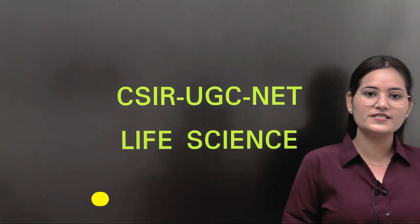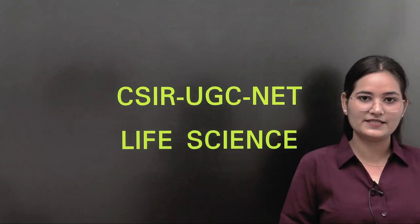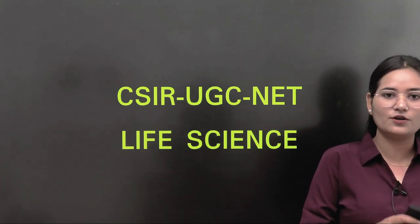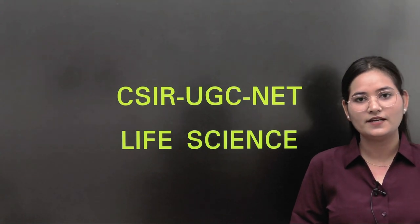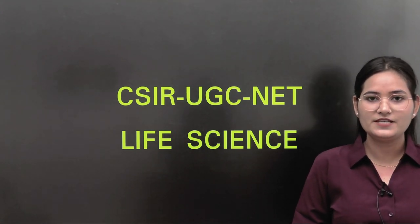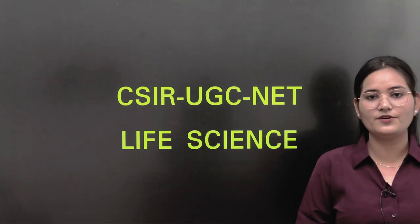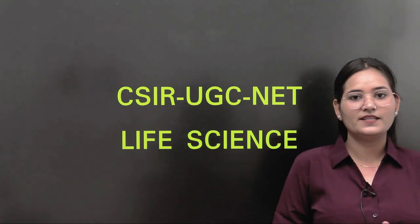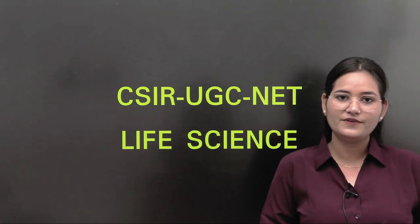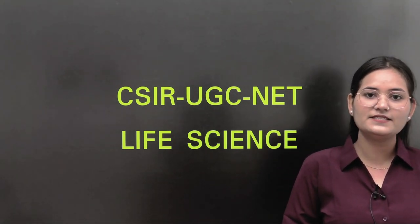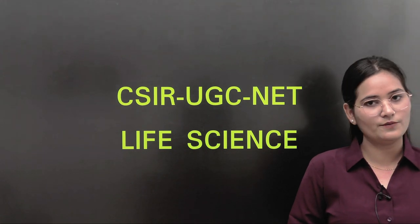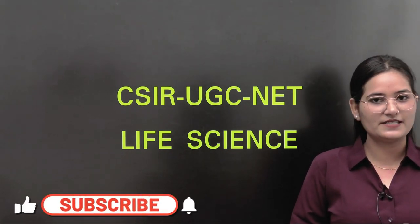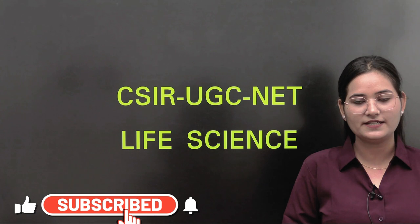CSIR UGC NET is basically an all India level examination. After qualifying CSIR UGC NET, you will be eligible for pursuing a PhD from any recognized institute of India. If you want to be an assistant professor, scientist, or scientific officer, you should qualify CSIR UGC NET.